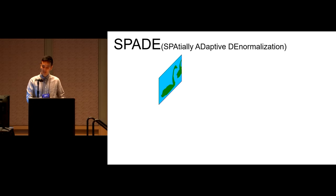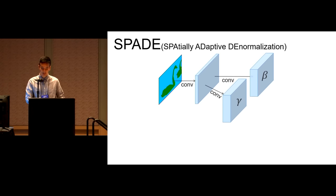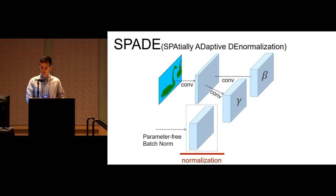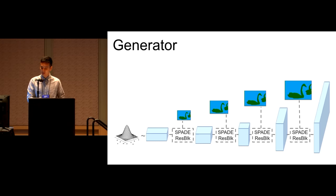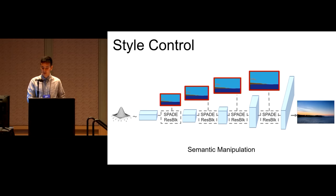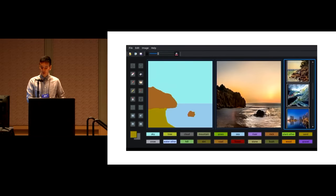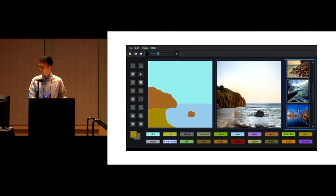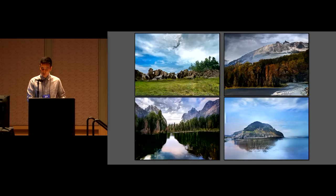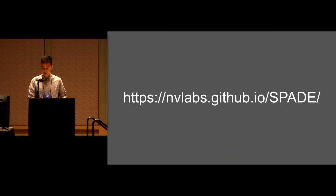Our generator architecture starts from random noise and uses the semantic map at every SPADE layer of upsampling ResNet blocks. Moreover, the new architecture allows nice separation between semantic and style control: changing the layout manipulates the content, while changing the random vector results in different styles. You can even jointly train an image encoder that captures the style of reference images. These images were all generated from semantic layouts trained on Flickr images. Please visit our website for code, online interactive demo, and pre-trained models.